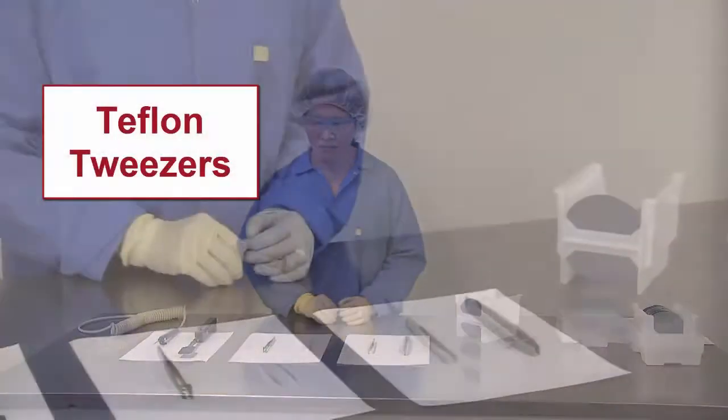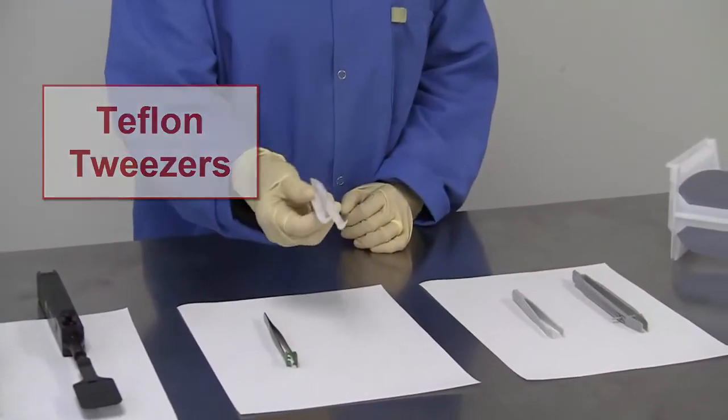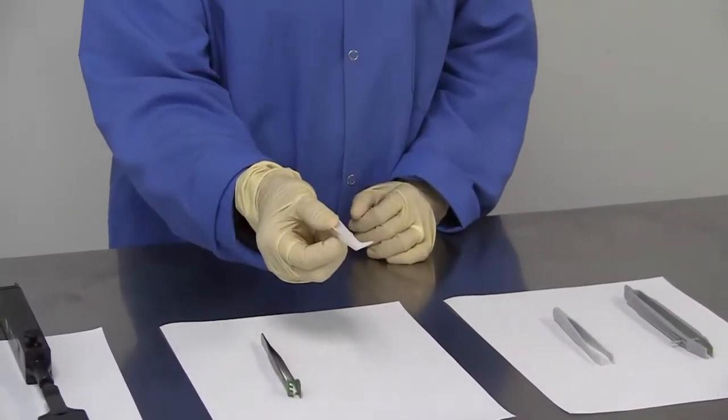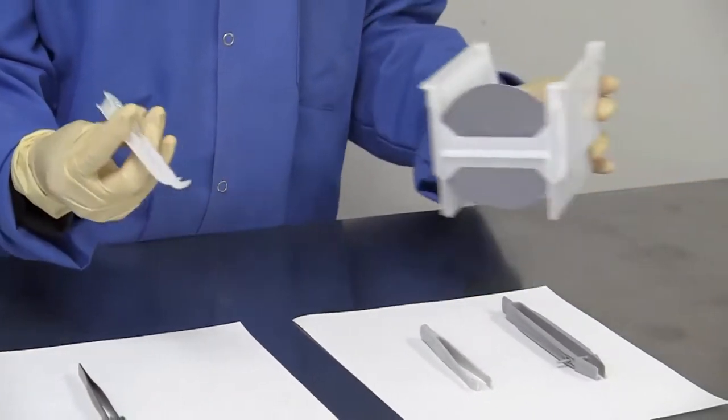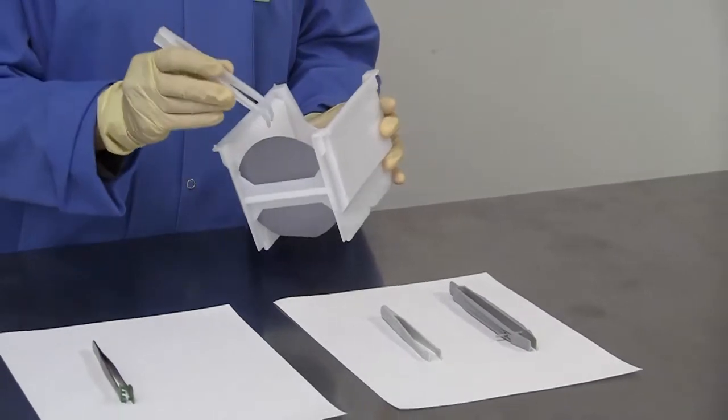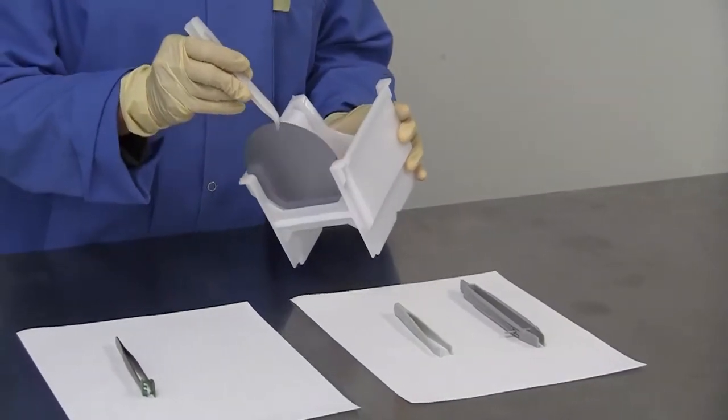Teflon tweezers are much more expensive but chemically inert. They do not grip well, so use them carefully so that your wafer does not slip. Use Teflon tweezers to hold your wafer about 3 to 4 millimeters from the edge, enough to get a grip.